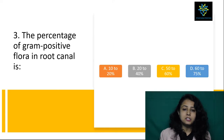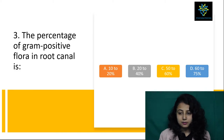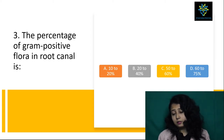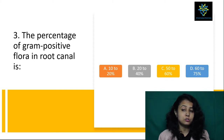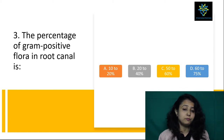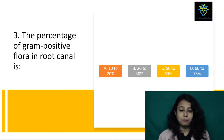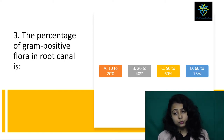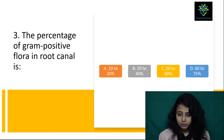Number 3: the percentage of gram positive flora in root canal is — options are 10 to 20%, 20 to 40%, 50 to 60%, and option D is 60 to 70%. The answer will be directly: 60 to 75% of gram positive flora will be present in the root canal. So the percentage of gram positive flora in root canal is 60 to 70% — this is the correct answer.